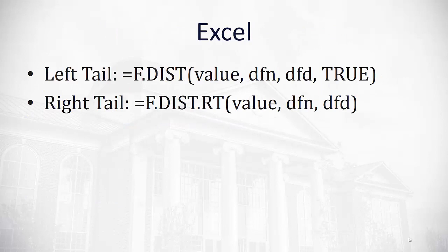Once we have our test statistic, we can use Excel to find the p-value to make our conclusion in the hypothesis test. Depending on if we have a left-tail or right-tail test, the command in Excel is slightly different. We will say equals F dot DIST, and if it's a left-tail test, we'll type in the value, the degrees of freedom for the numerator, the degrees of freedom for the denominator, and then we'll always say true. If it's a right-tail test, we don't need to put the true at the end, and we'll put dot RT before the first parentheses.